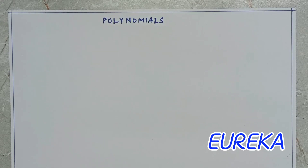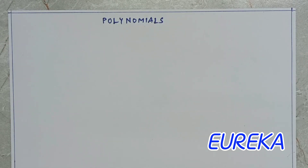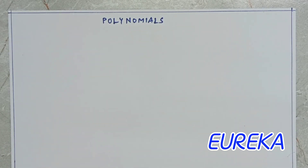Now, polynomials was there in 9th standard and earlier to that also. If you remember about one term, two terms, three terms — those expressions we used to consider: that is monomial, binomial, trinomial and so on. Do you remember what we used to call when there are more than three terms? We used to call them as polynomials, and not just for more than three terms but overall the family used to be considered as the family of polynomials. Whether it is a monomial or binomial, all used to comprise in this only family called polynomials.